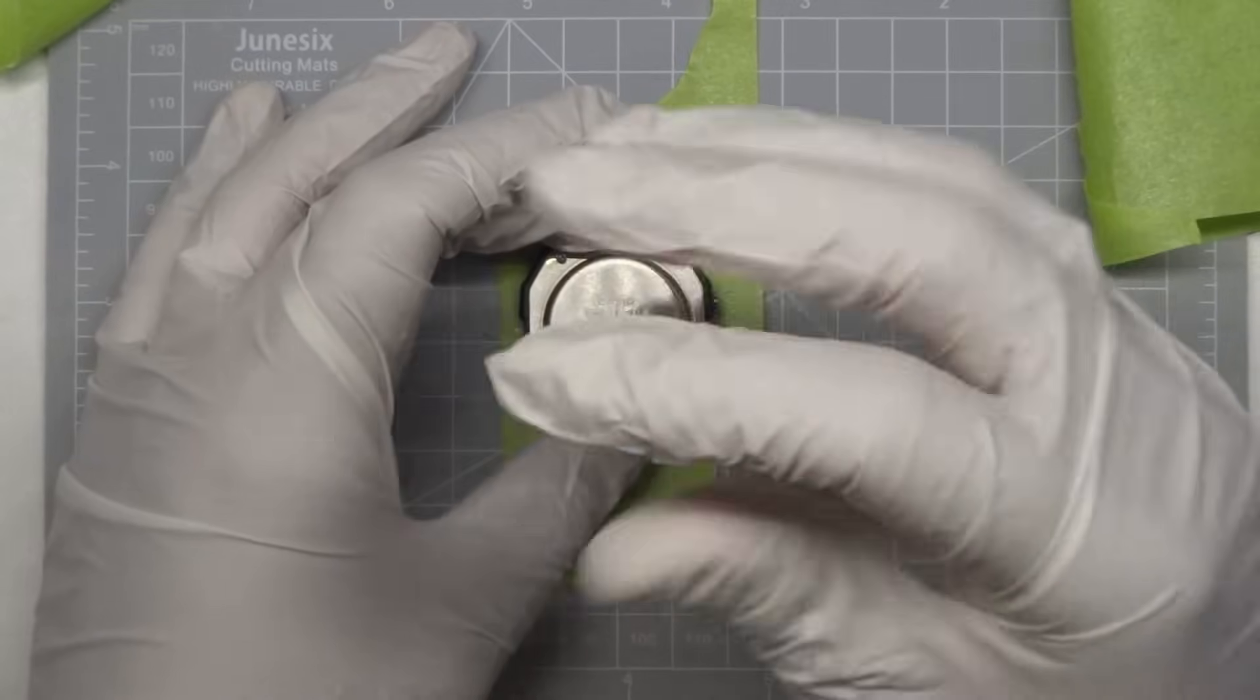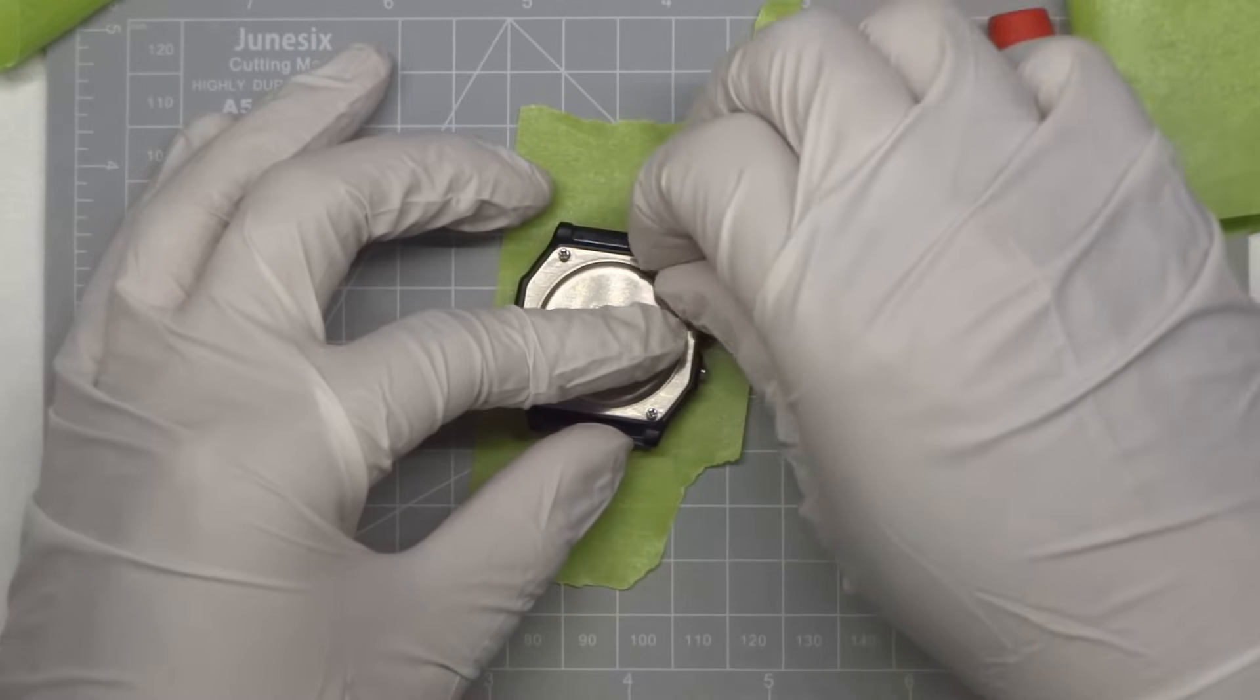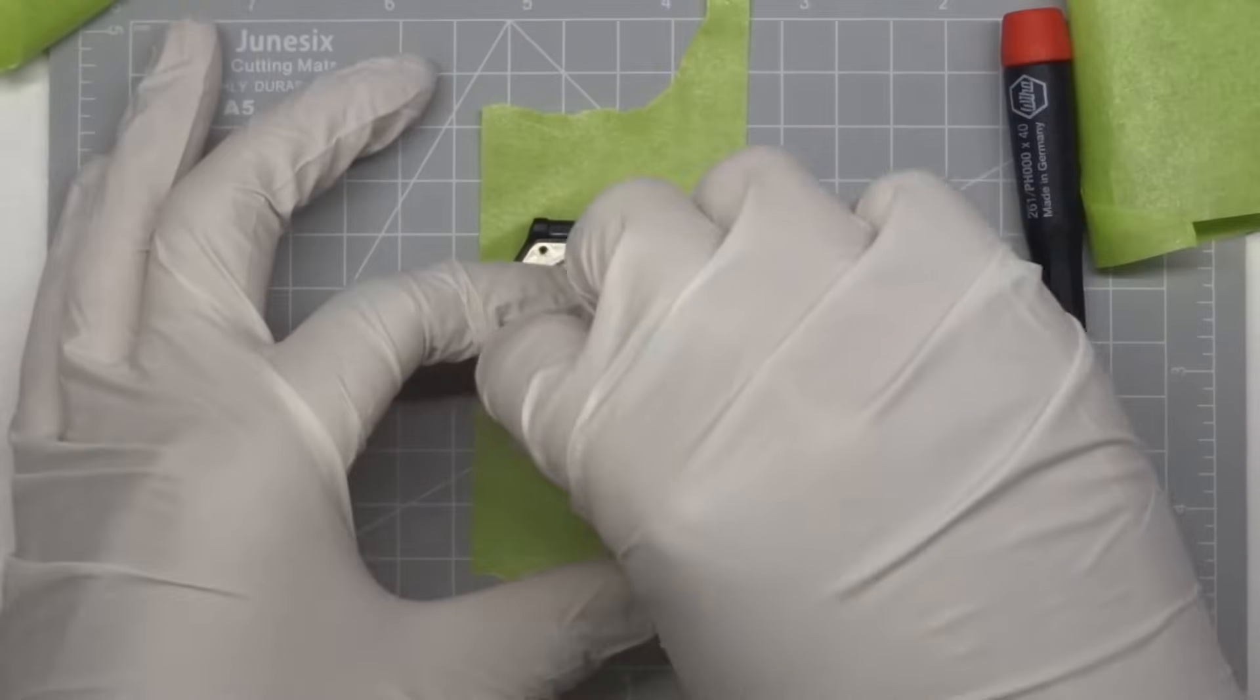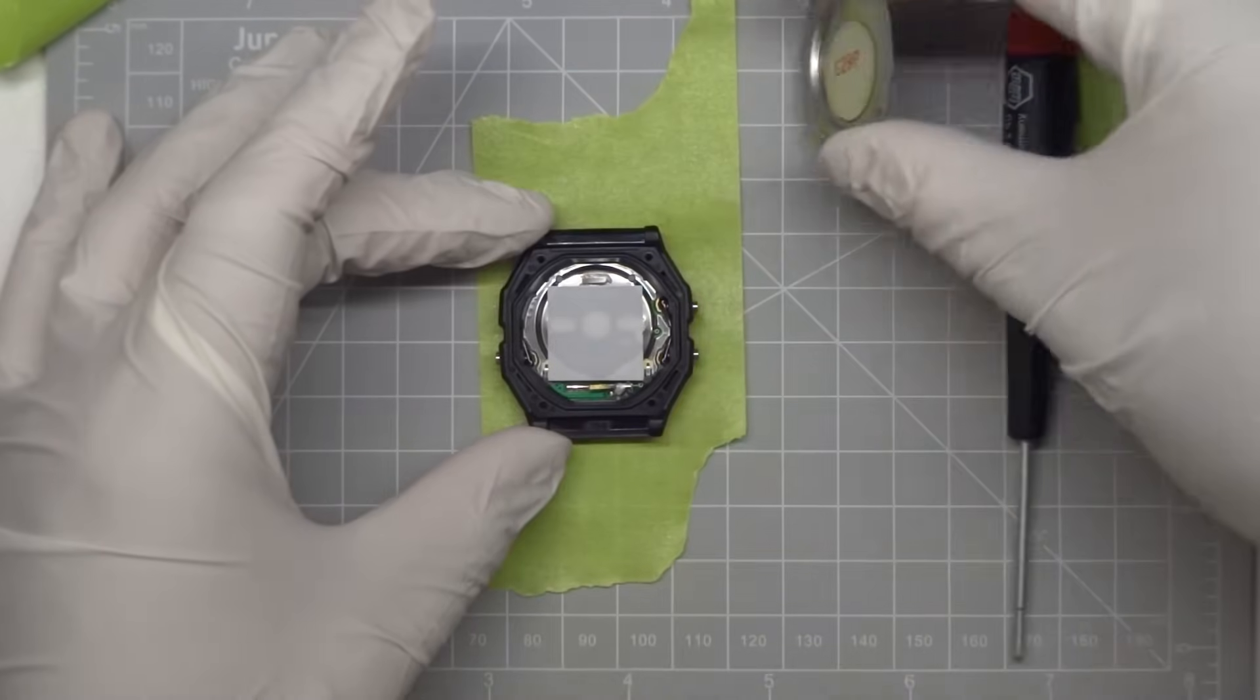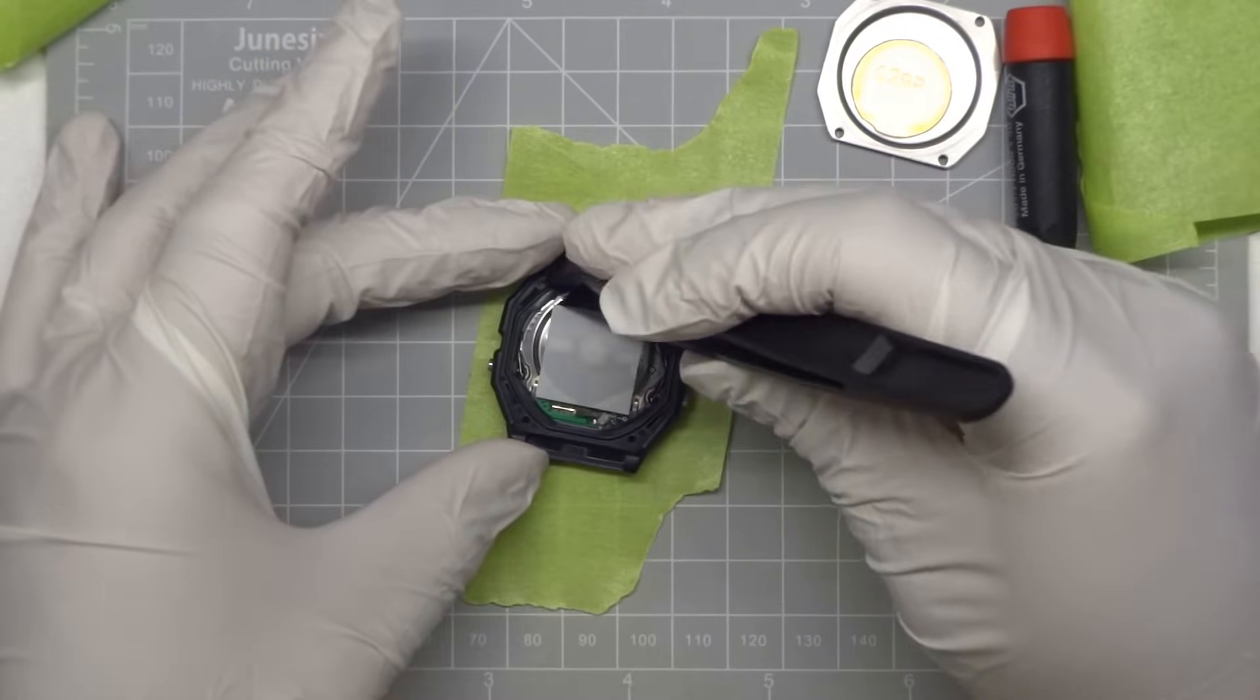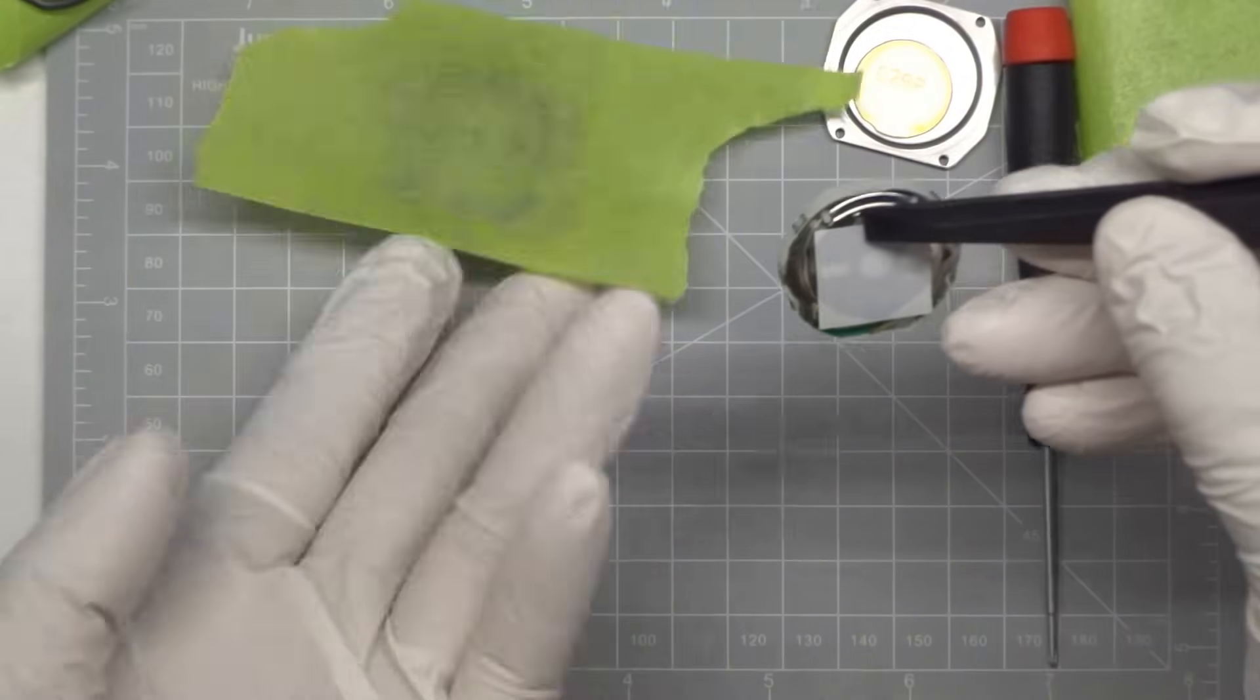Remove the four back screws. Remove the back plate. Remove the gasket. Remove the module from the case and set the case face up to avoid dust from falling in.